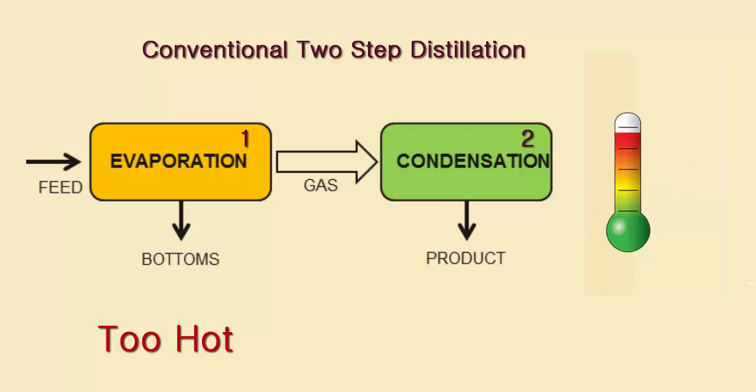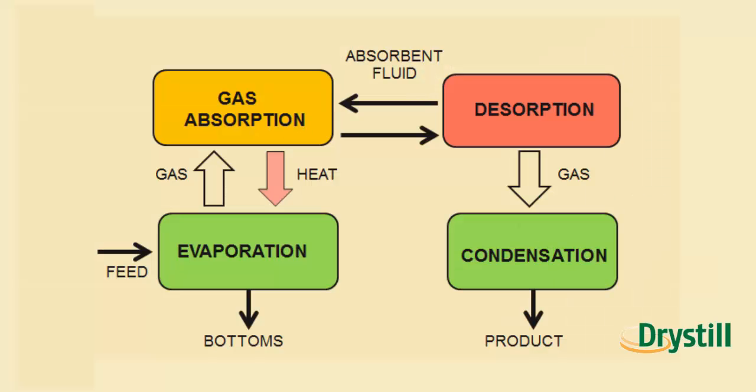A second limiting feature of the process is that it is extremely energy intensive. Drystill offers a four-step process that reduces both the evaporation temperature and the overall energy consumption. It addresses a felt need in many industries for a new and better way to separate volatile components from temperature-sensitive liquids and slurries.